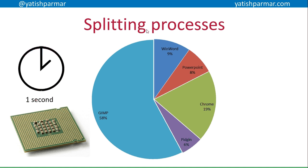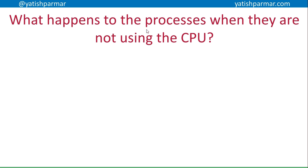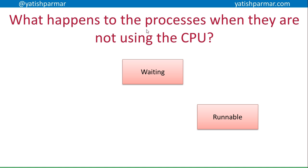Not all processes are running at the same time — the core can only process one instruction at a time. Any process can be in one of three states. Waiting: the process is waiting for something to happen — for processing time, for data to arrive, for buffers to fill, or for user input. Runnable: the process has the data or input it needs and is ready to run, but the operating system hasn't yet allocated it CPU time. Running: the CPU is actively working on that particular process.